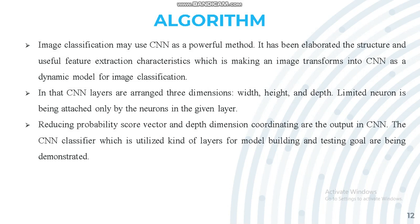CNN layers arrange the dimensions of images such as width, height, and depth. A limited neuron is attached only by the neurons in the given layer, reducing the probability score vector and depth dimension at the output. We have utilized several kinds of layers for model building and testing, as will be demonstrated.